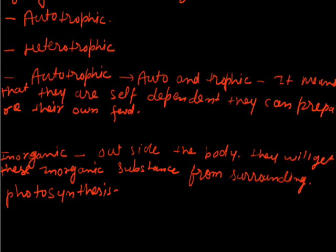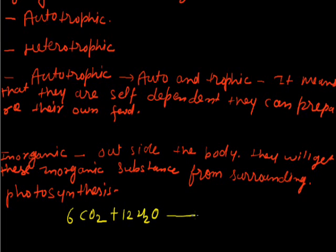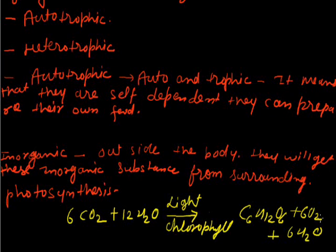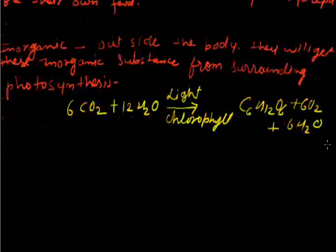Photosynthesis is a process to produce food in the presence of some inorganic substances. The simple equation of photosynthesis can be written as: 6CO₂ plus 12H₂O, in the presence of light and chlorophyll, produces glucose, oxygen, and water. So when they use CO₂ and water in the presence of sunlight and chlorophyll, they produce glucose, oxygen, and water.